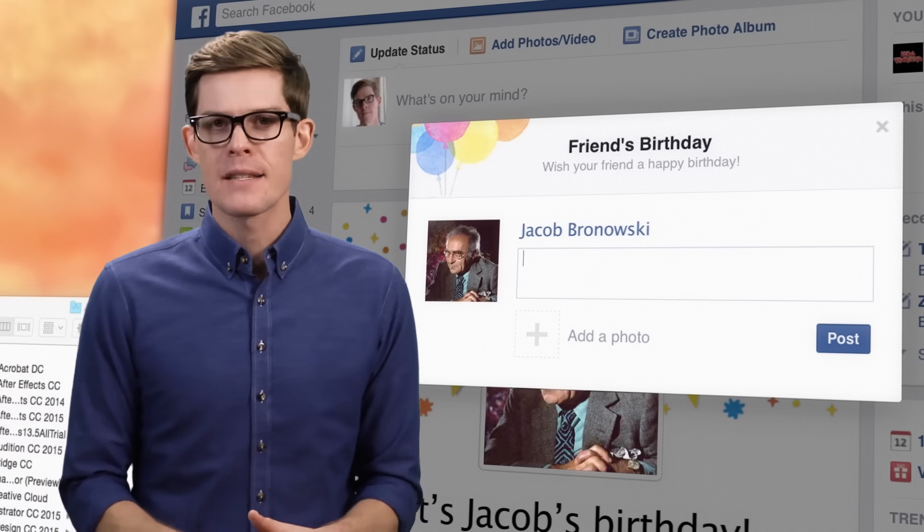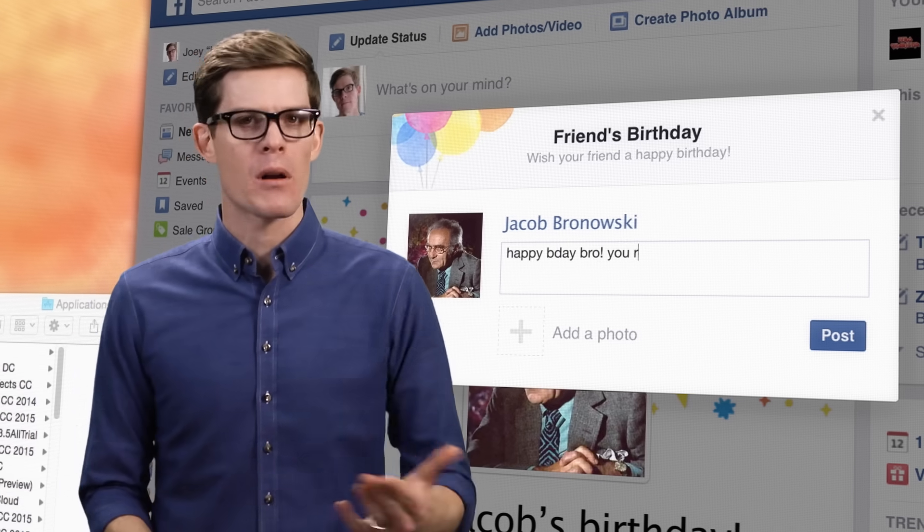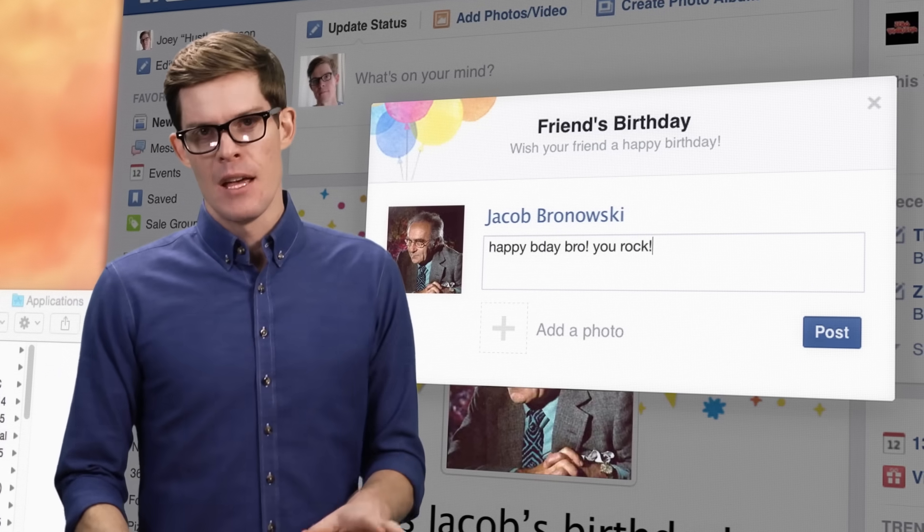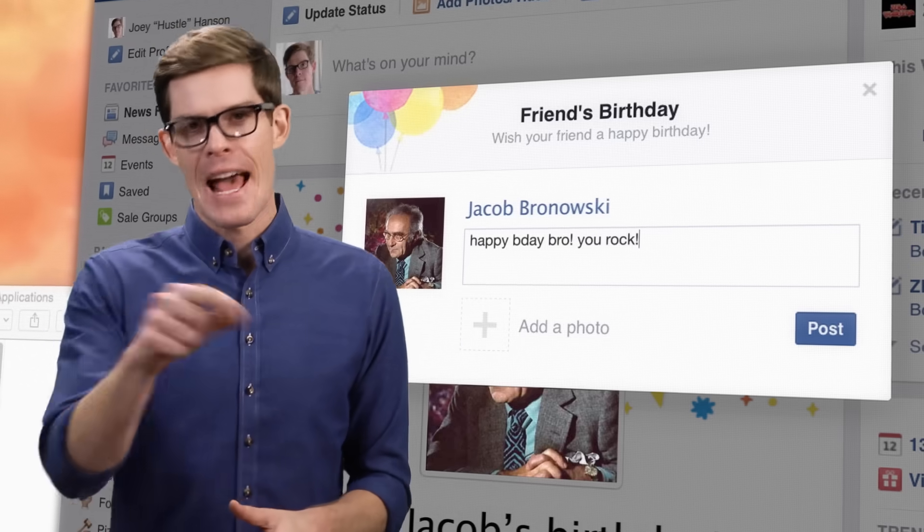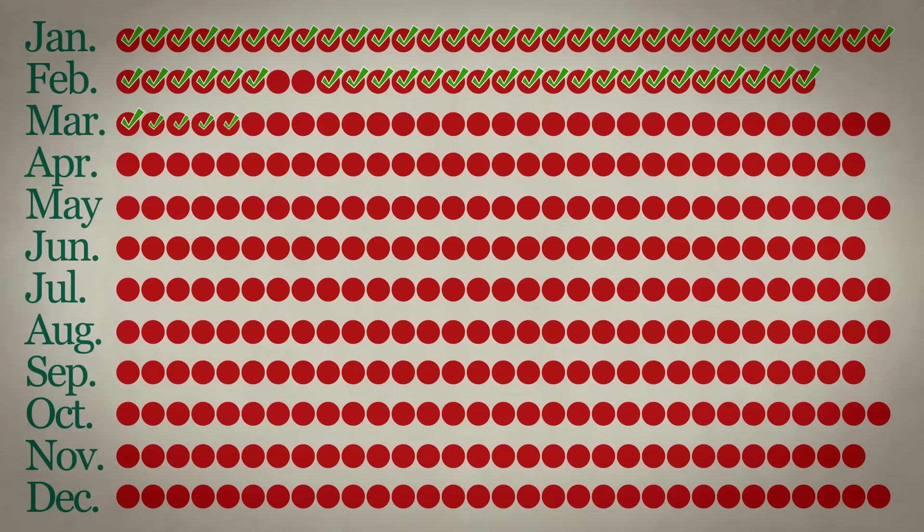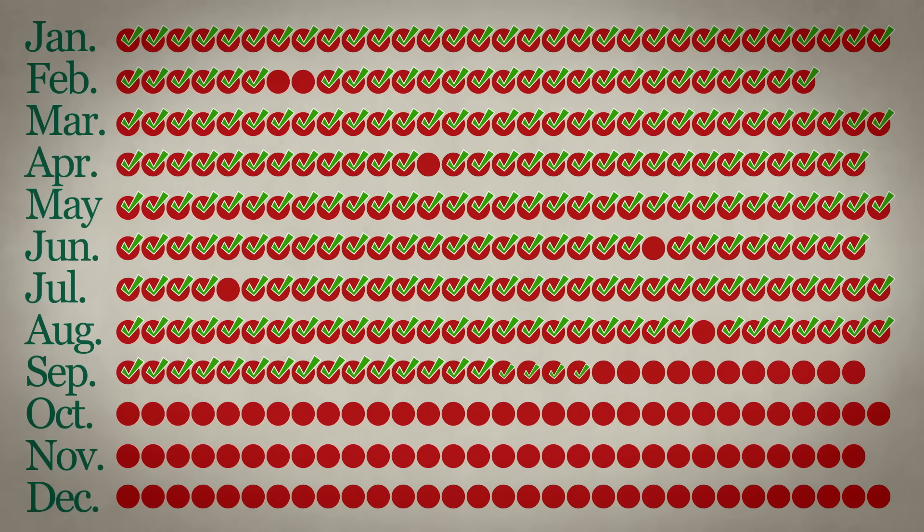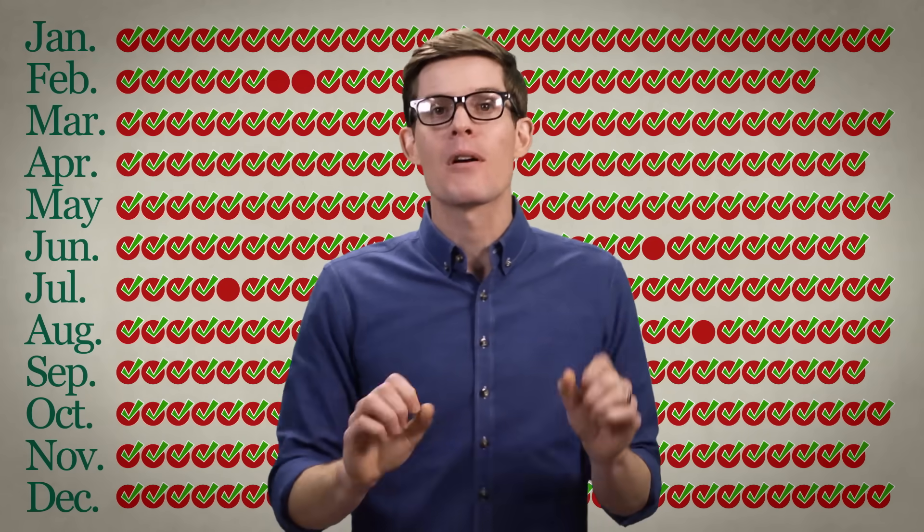I've been noticing on Facebook lately that I seem to have at least one friend with a birthday every single day. But on closer examination, it's not actually every single day. I've got most birthdays filled, but a few are still open. So how many would I have to have to be able to type happy birthday on a friend's wall every single day?